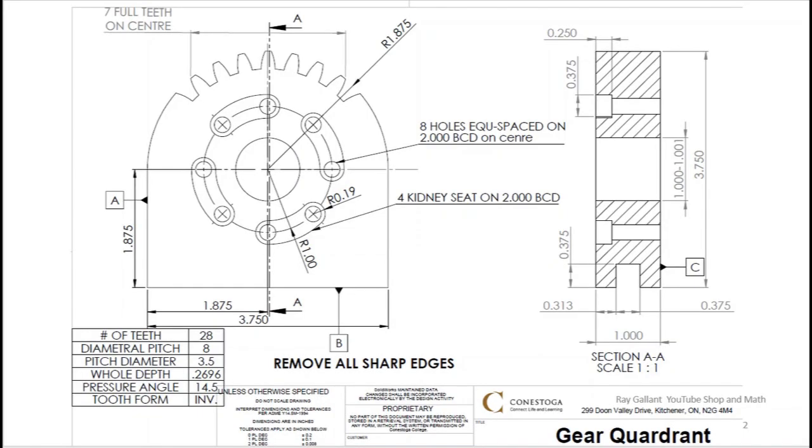If you're one of my students and you're watching this, this is our level three GM project. The important things to point out is we're only cutting seven teeth of 28, so it's basically one quarter. The diametrical pitch is eight.